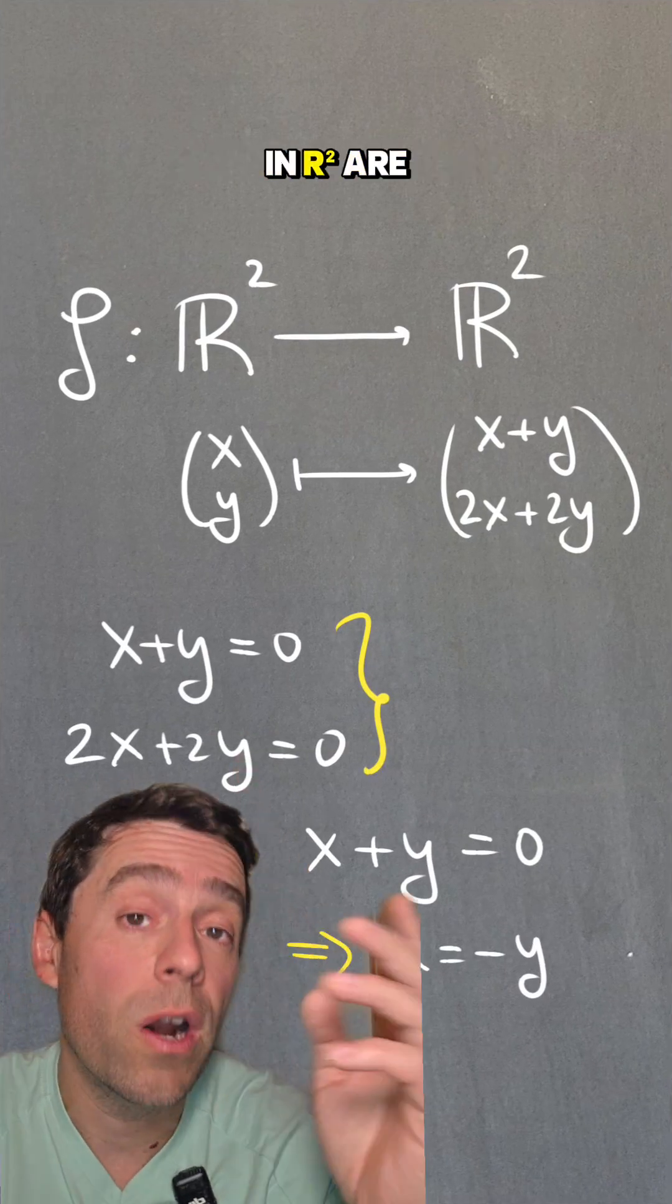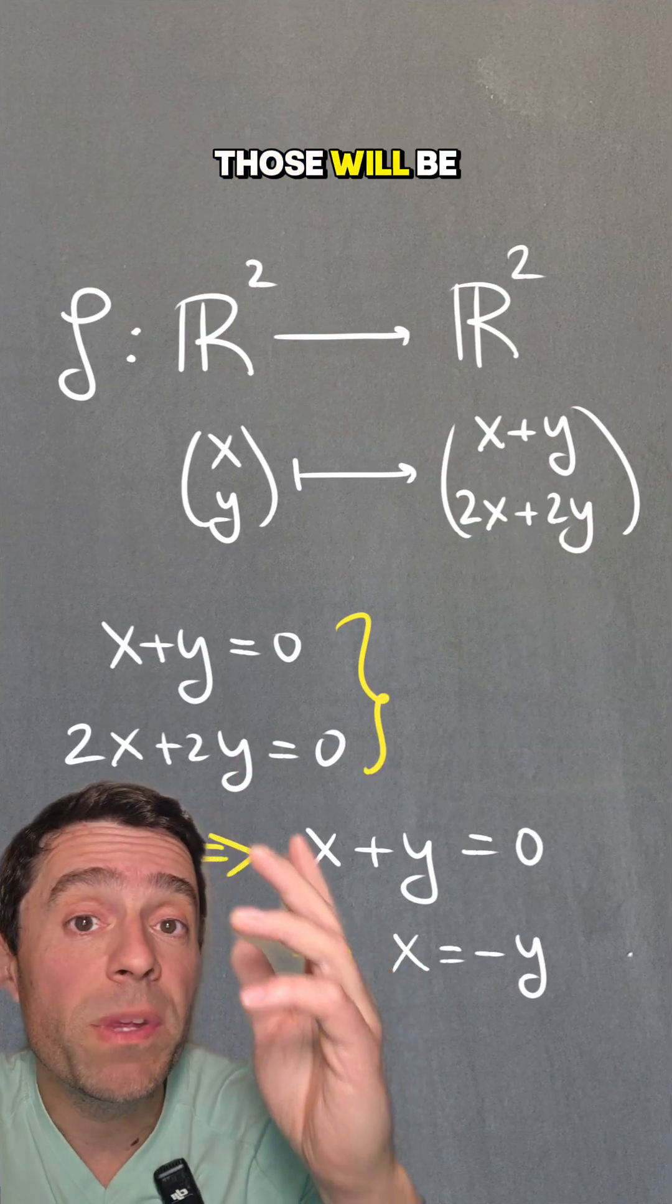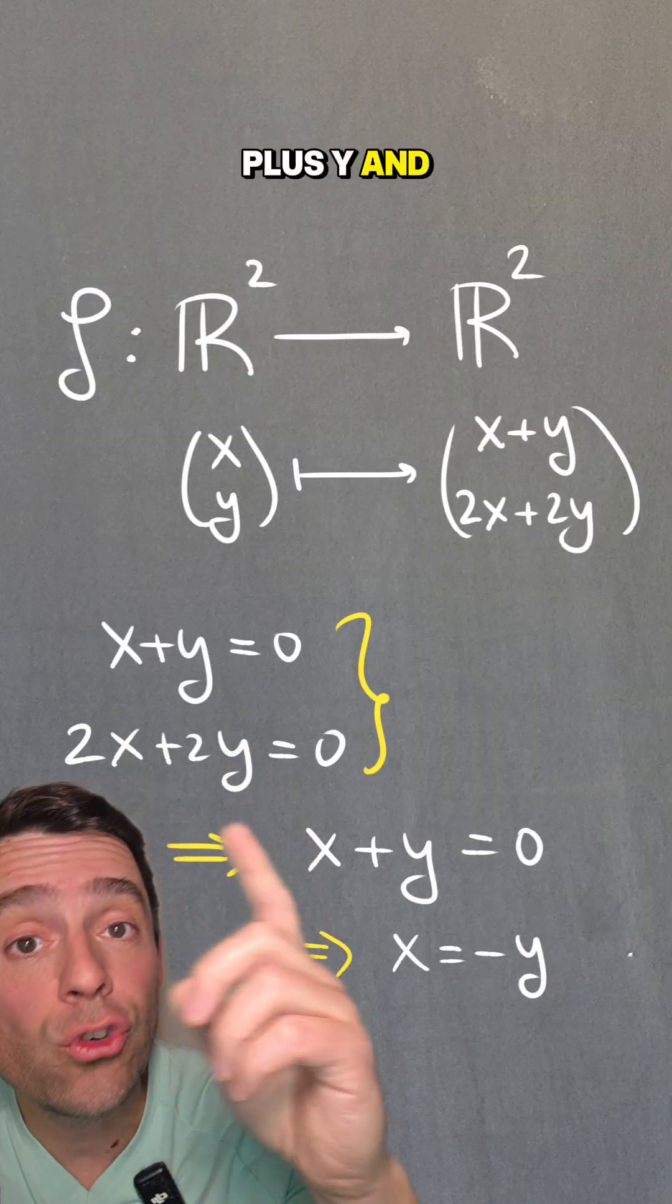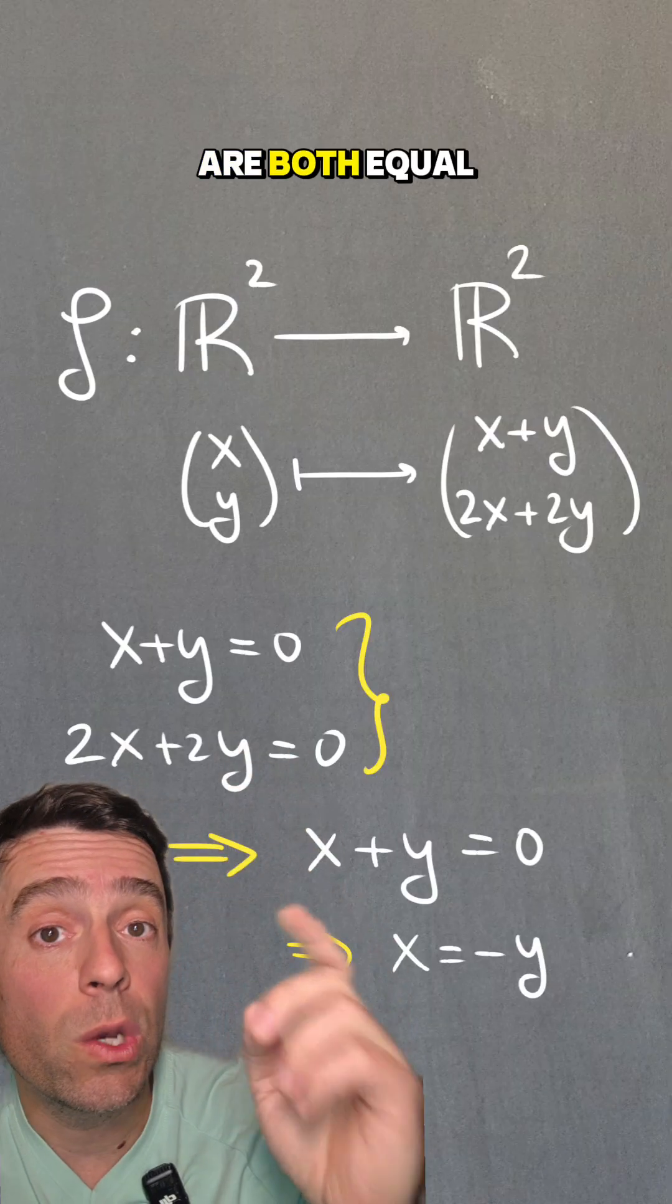So what vectors in R² are in the kernel of this map? Those will be vectors (x,y) such that x+y and 2x+2y are both equal to 0.